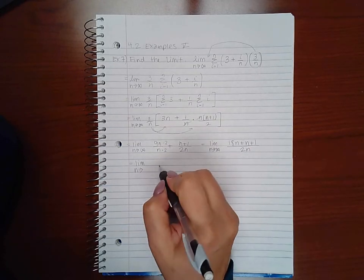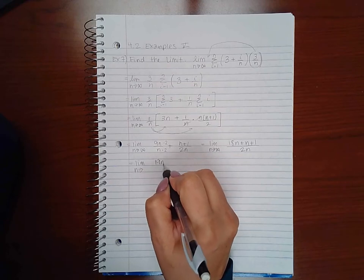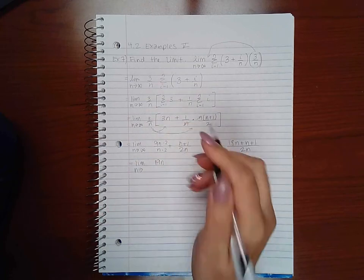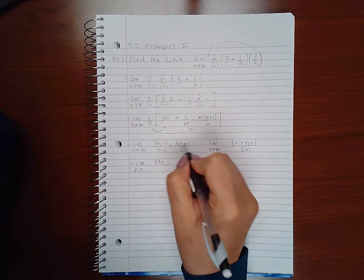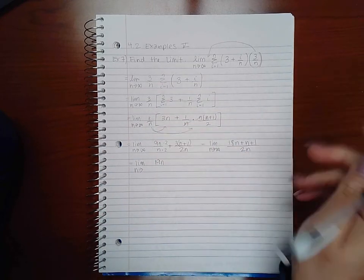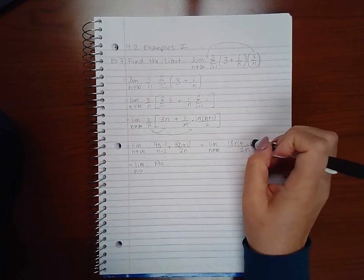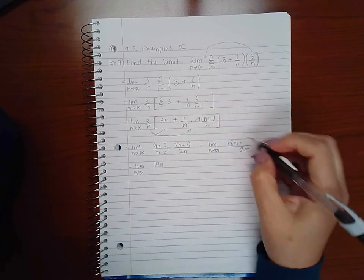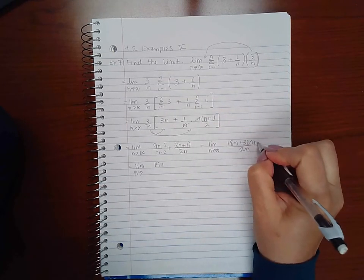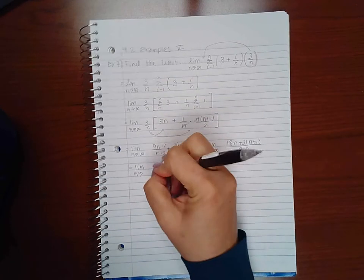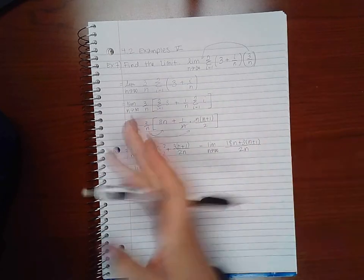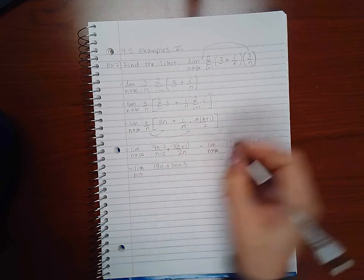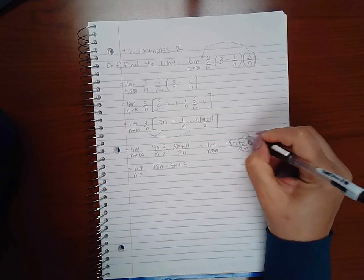Of this would be 19N, oh I did make a mistake here. It would be 3 times 1 which is 3 times the N plus 1, so really here because the numerator times the numerator, so really here I would have 3 times N plus 1. So I won't have 19N, we'll see what we do have. We will have 18N plus 3N plus 3 if I distribute this positive 3.